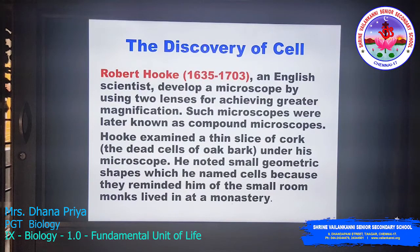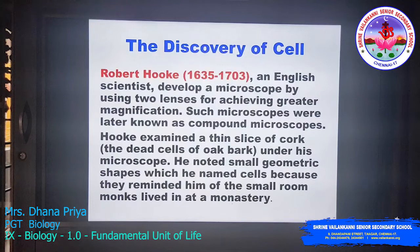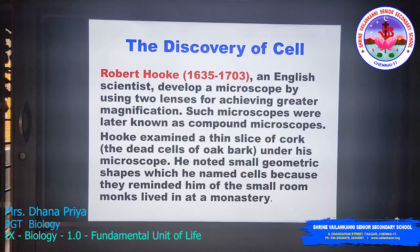Hooke examined a thin slice of cork — the dead cells of oak bark — under his microscope. He noted small geometric shapes which he named 'cells' because they reminded him of the small rooms monks lived in at the monastery. Cork refers to the wooden piece used to close a bottle, like a lid, and it comes from the oak tree. He took a thin slice of that cork, placed it under the microscope, and observed polygonal or rectangular geometric shapes, which he named cells.